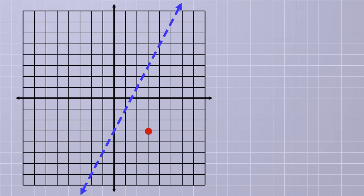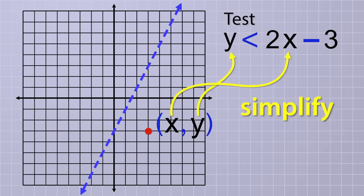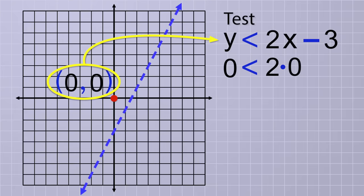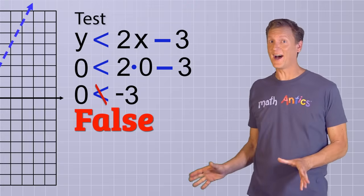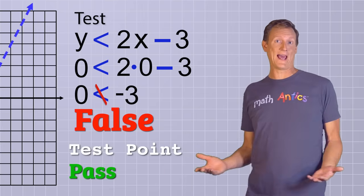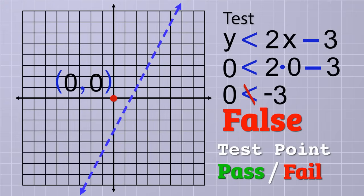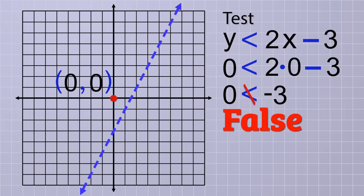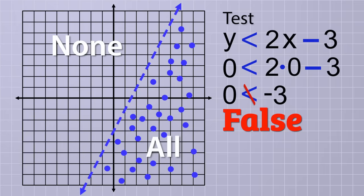The only real restriction is that the test point can't be on the boundary line itself. Once you've decided which test point to try, plug its x and y values into the inequality and then simplify it. For example, if we pick the point (0,0), we'd plug those values into the inequality to get 0 is less than 2 times 0 minus 3, which simplifies to 0 is less than negative 3. But hold on a second! That's not true! 0 is not less than negative 3! Ah! That's why it's called a test point. The point that you choose can either pass or fail the test. In this case, since plugging the point's x and y values into the inequality gave us a false result, that means that the point is not a valid answer for the inequality. Therefore, (0,0) must be on the side of the boundary line where none of the points are included in the solution set, which means that all of the points on the other side will be included.